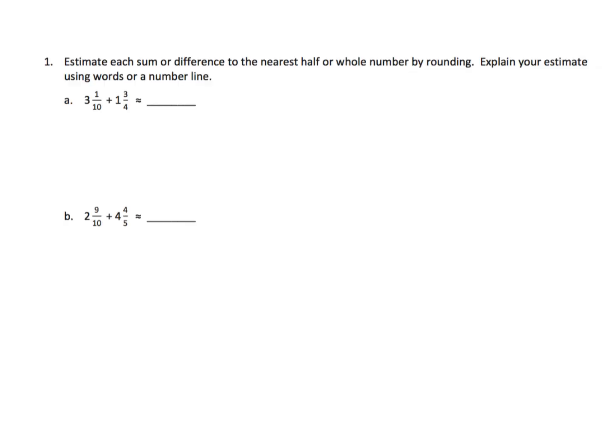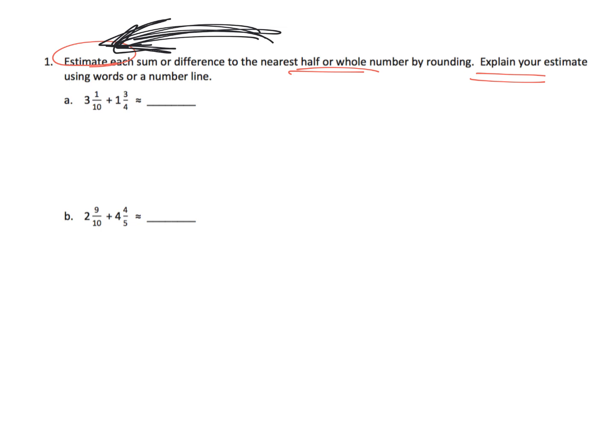The directions say: estimate each sum or difference to the nearest half or whole by rounding, and then explain your estimate. Now, parents and teachers, the first thing I have to say is we are estimating here. So please, for these lessons that use estimating, do not use the answer key in the back of the book to assess whether a student's estimation is correct or not, because the whole point of estimation is some students' estimations are going to be closer than others, but we do not want students to feel like they have to match their estimation to the back of the book.